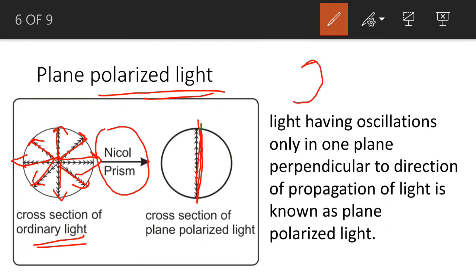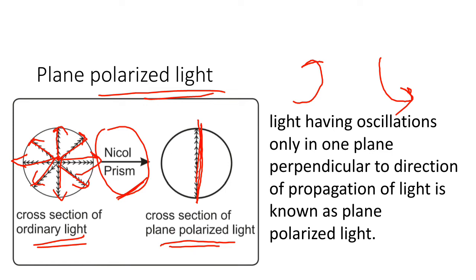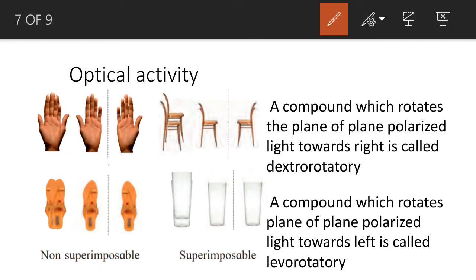This plane polarized light can rotate either clockwise or anti-clockwise. So from ordinary light, we convert it to plane polarized light with the help of a Nickel prism. The Nickel prism converts the cross-section of ordinary light into plane polarized light. This is the function of the Nickel prism — it provides the rotation of the molecule.